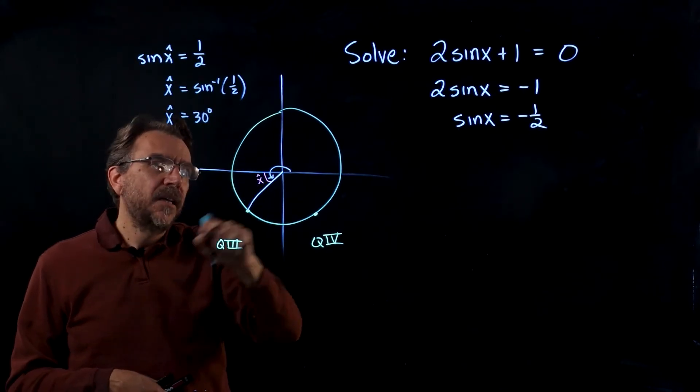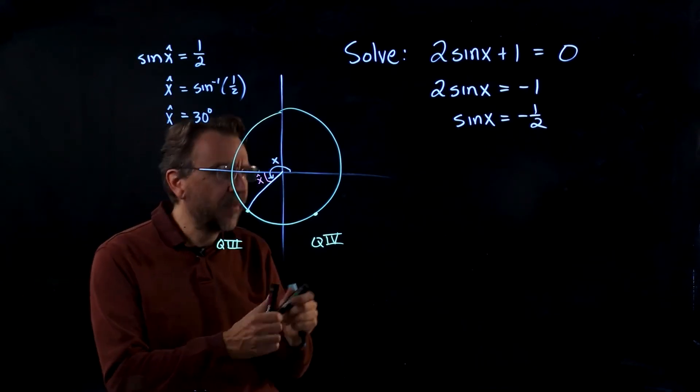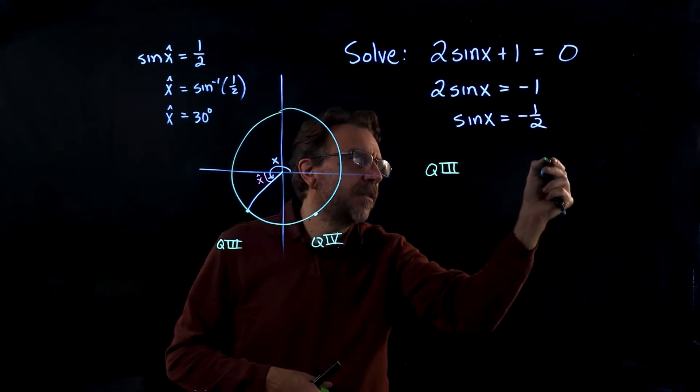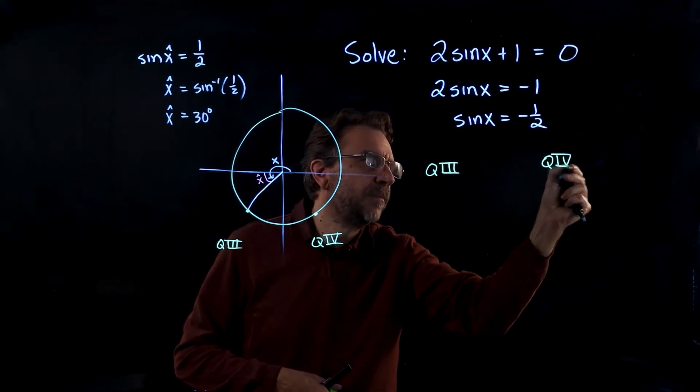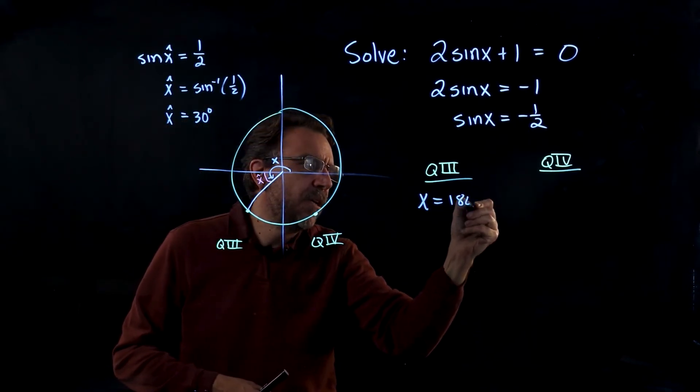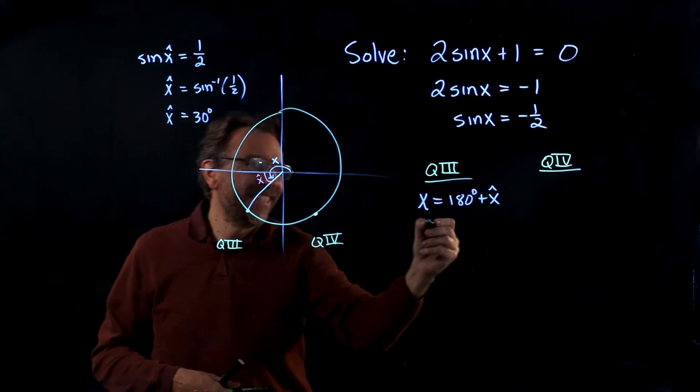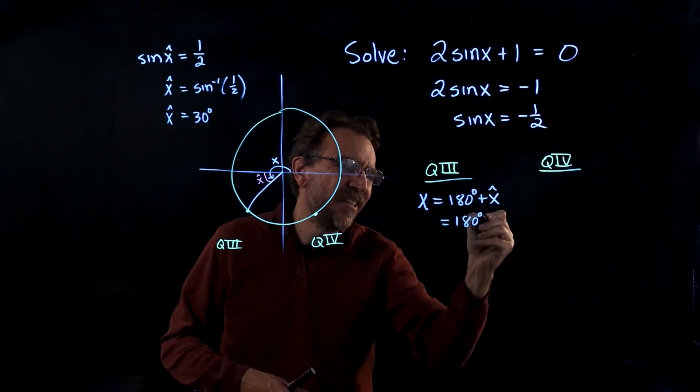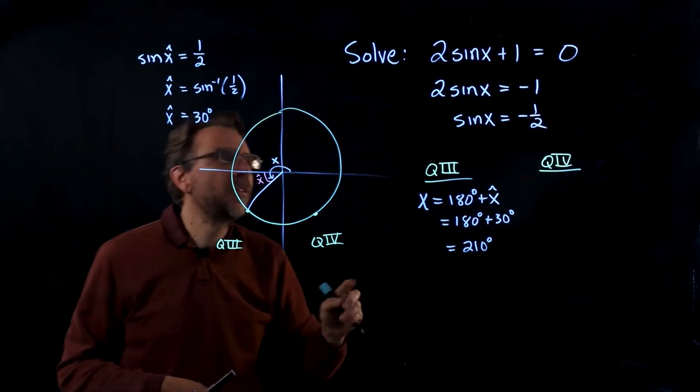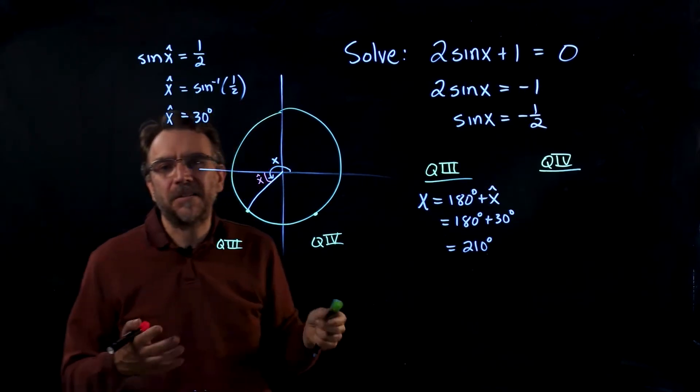To get the angle x in Q3, we take 180 degrees plus the reference angle. We're going to have a Q3 answer and a Q4 answer. In Q3 we have 180 degrees plus 30 degrees, which is 210 degrees. If you take 210 degrees and plug it into the original equation, you'll see that you get zero. It works.